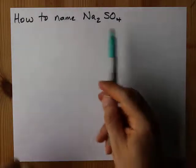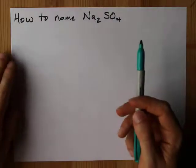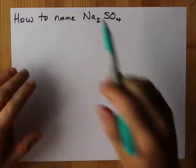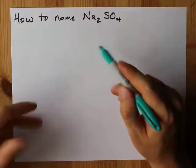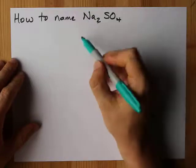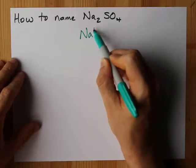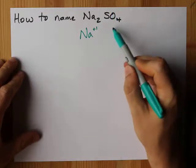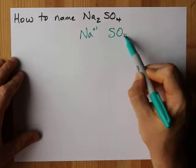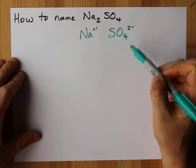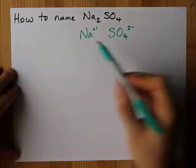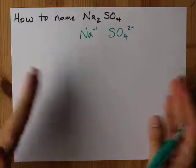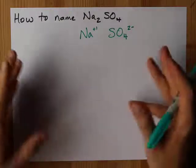How do you name Na₂SO₄? Your job is to identify the positive and negative ions that make up this ionic compound. Note that there's a metal — in this case Na with a +1 charge — and SO₄²⁻, which you should identify as a polyatomic ion. Each of these has its own special name, and you put those two together to make the name of the whole compound.